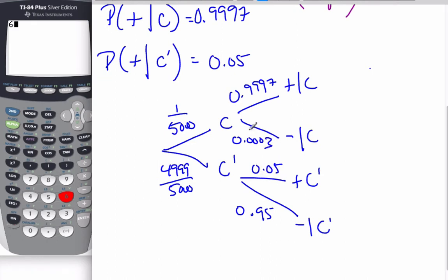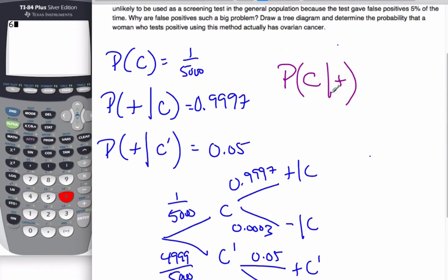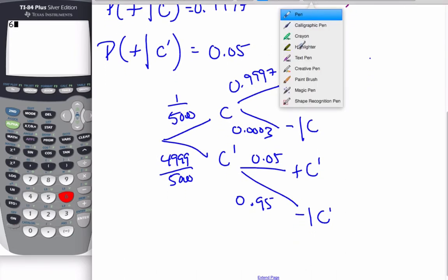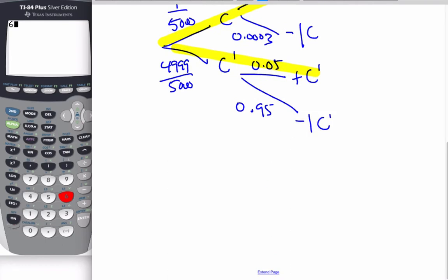Okay. So now, if I want to find the probability of having cancer given that I have tested positive. Well, if I have tested positive, that means that is this branch and that is this branch. There are two possibilities to test positive. And so if I'm going to look for the probability of cancer given I tested positive, using our definition of conditional probability,